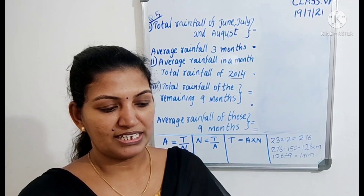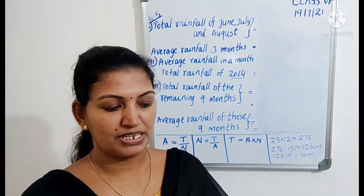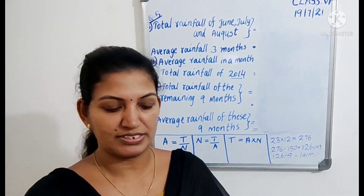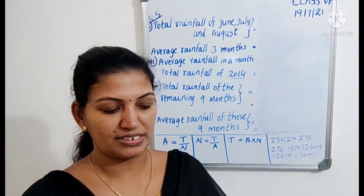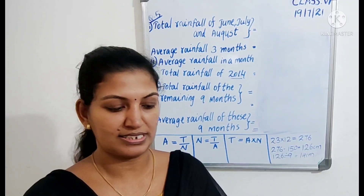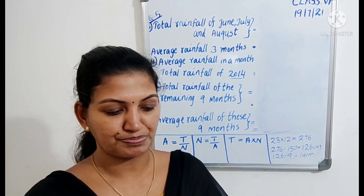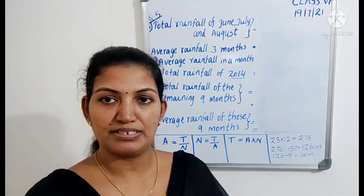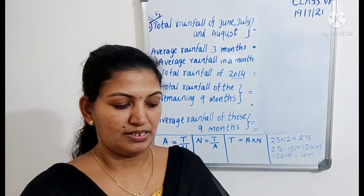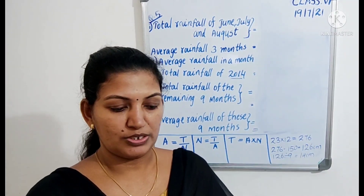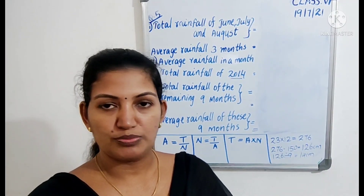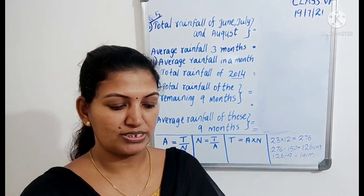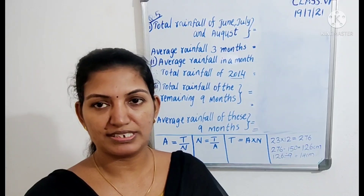It is given that the average rainfall of 1 year, that is 2014, is 23 cm. It is also given that the total rainfall of 3 months — that is June, July and August — is 150 cm.